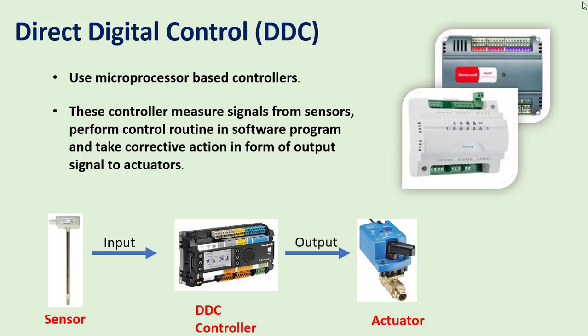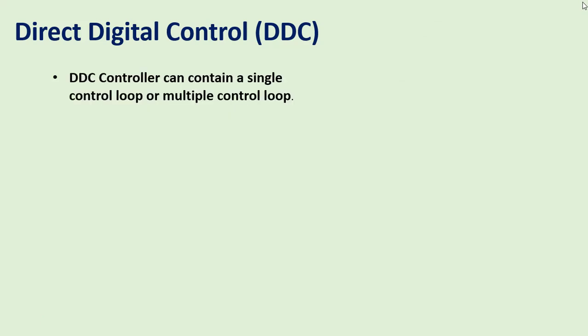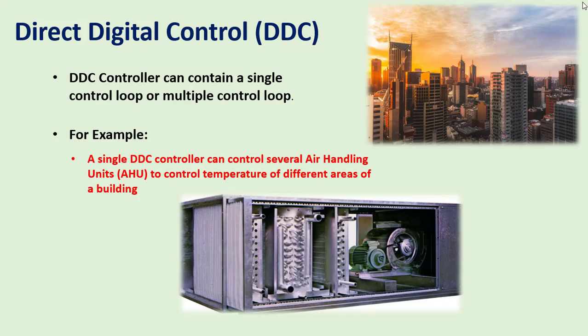DDC controllers take corrective actions in the form of output signals to actuators and are the most commonly used controls in today's buildings. A DDC controller can contain a single control loop or multiple control loops to control many processes — for example, a single DDC controller can control several air handling units to manage the temperature of different areas of a building.